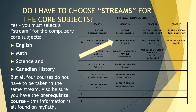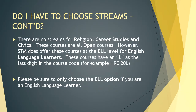You do not have to take the same stream for all of your courses, but you must be sure you have the prerequisite course. This information is all found on MyPath when you click on the course. When selecting Religion, Career Studies, and Civics, note that there are no streams — these courses are all open courses.